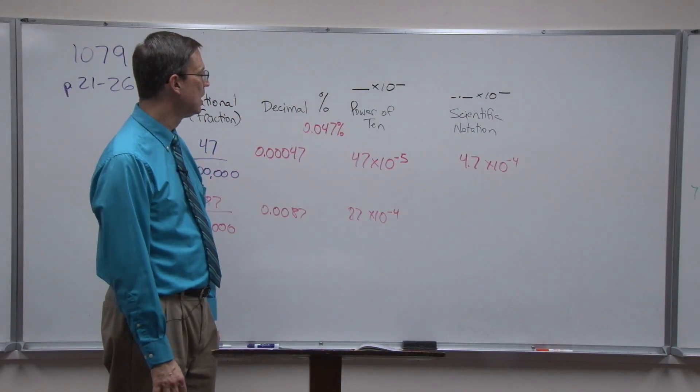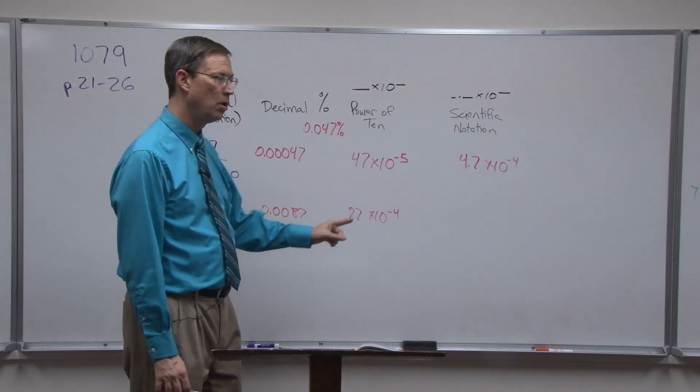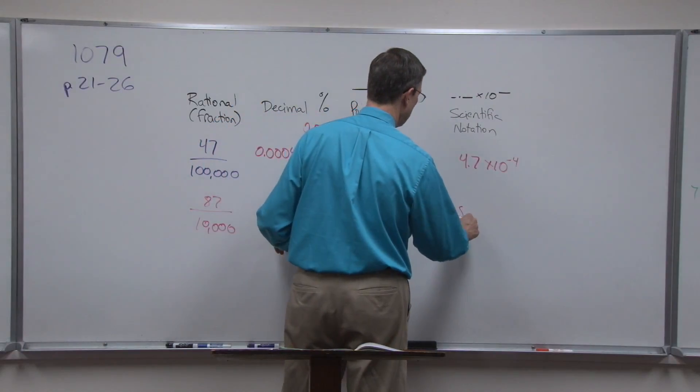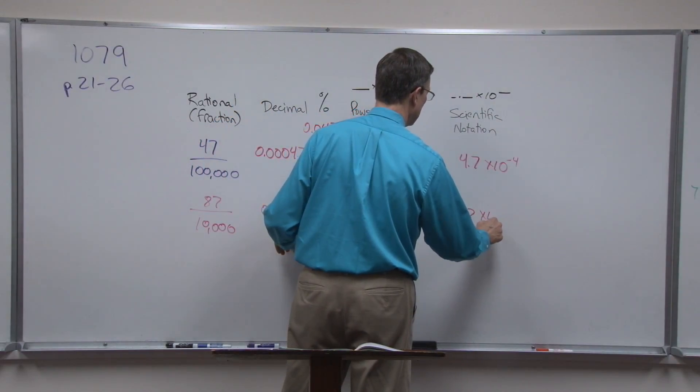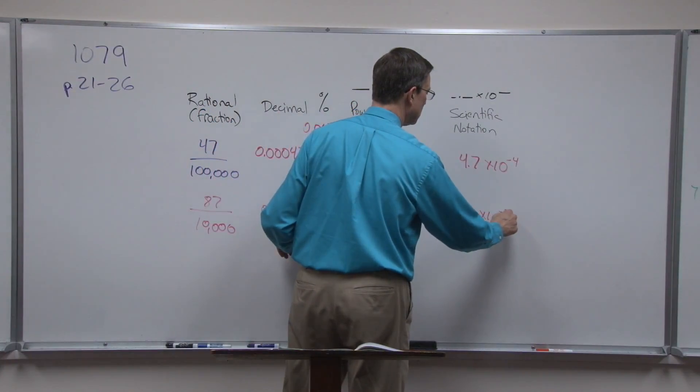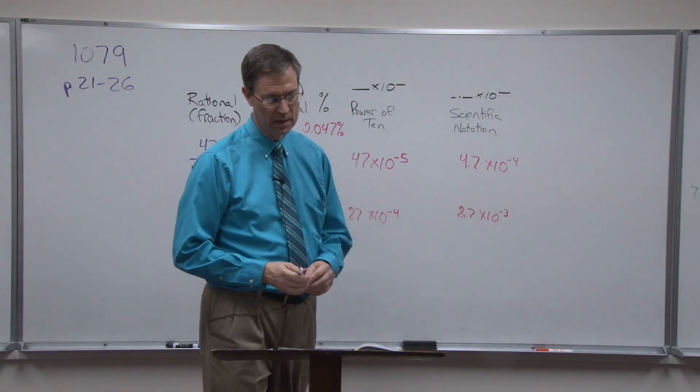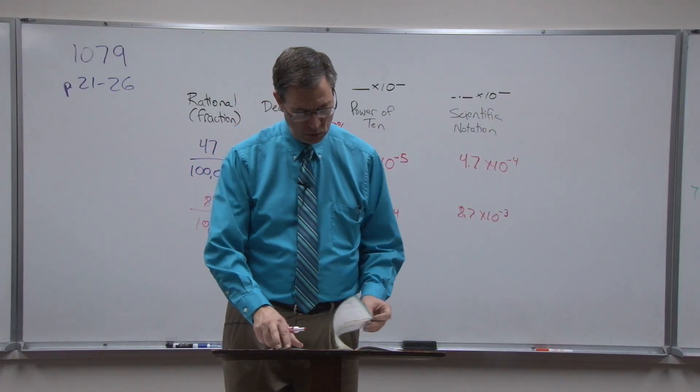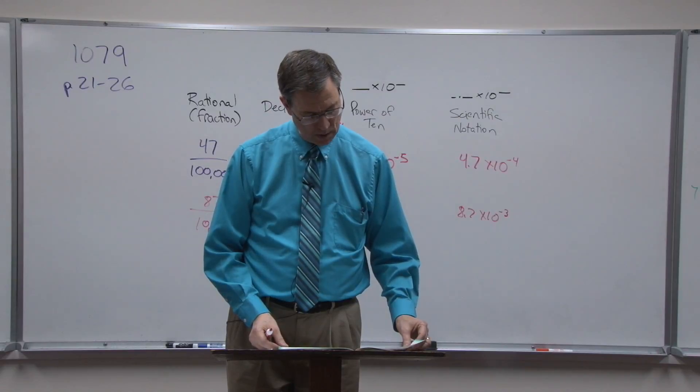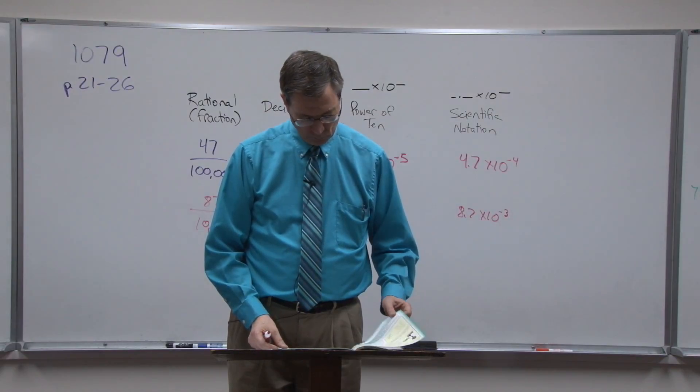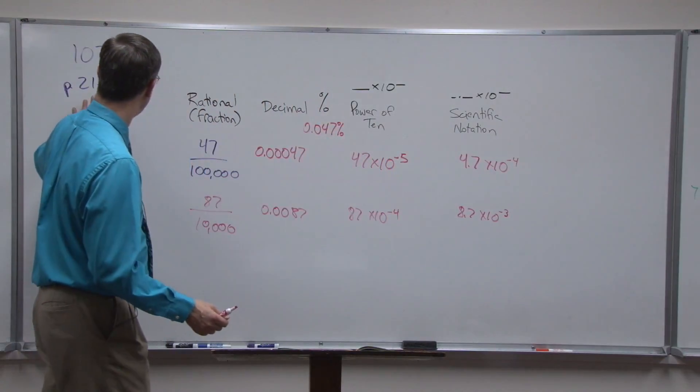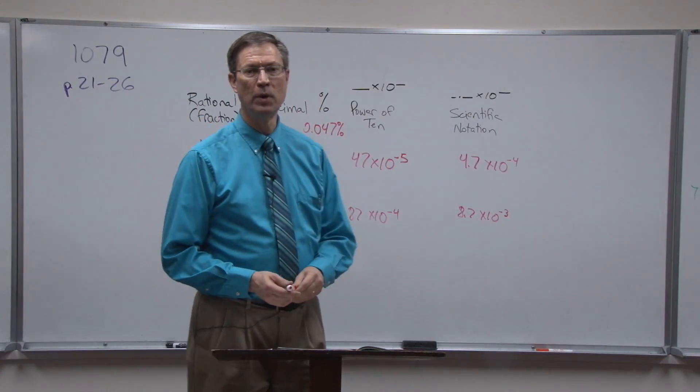Now to write it in scientific notation, I don't take the decimal all the way to the end. I need to stop after the eight, and so I have 8.7 times 10 to the one, two, three, 10 to the negative third. And it looks like here on this page all those numbers are small decimal numbers. I'm going to stop right there, and I think that should help you be able to do these pages 21 through 26.